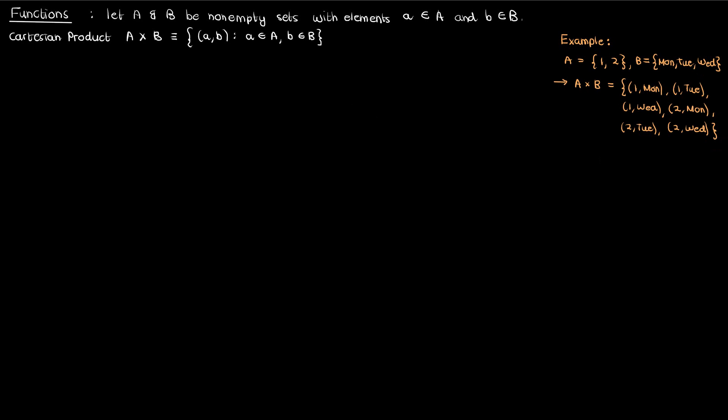So in this example, the Cartesian product would be a cross b equals {(1, Monday), (1, Tuesday), (1, Wednesday), (2, Monday), (2, Tuesday), (2, Wednesday)}. Basically, a Cartesian product between two sets is the set of all possible pair combinations between the elements of those two sets, with the restriction that an element from one set cannot be paired with an element from the same set.